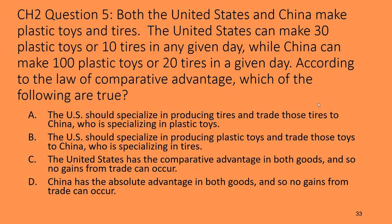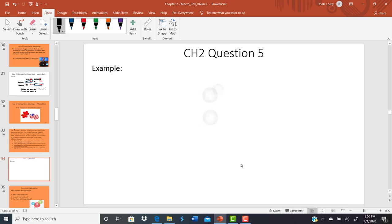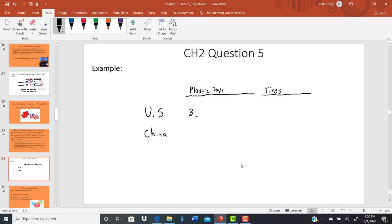Let's work this out. We have two countries — the United States and China — producing two goods: plastic toys and tires. The U.S. can produce 30 plastic toys or 10 tires; China can produce 100 plastic toys or 20 tires. Right off the bat, China has the absolute advantage in both goods — they have a lot more people. But having the absolute advantage in both things doesn't mean you have the comparative advantage in both — that's impossible.